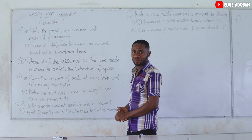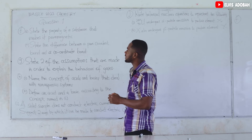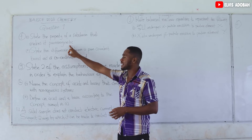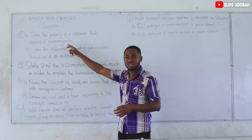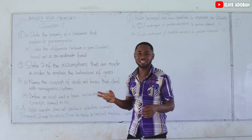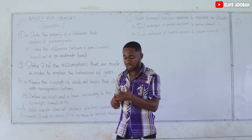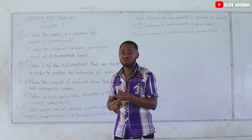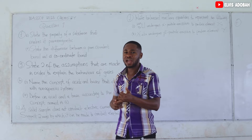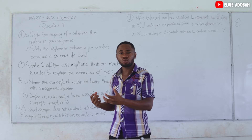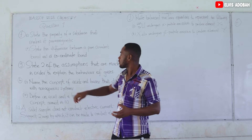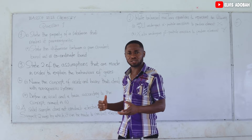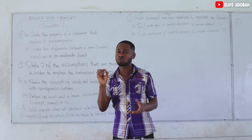Question 1F is made up of two parts. The first part: state the property of a substance that makes it paramagnetic. We have three types of magnetic materials: ferromagnetic, paramagnetic, and diamagnetic. For ferromagnetic materials, they have a strong attraction towards a magnetic field. For paramagnetic materials, they also have attraction towards a magnetic field, but their attraction is weak.